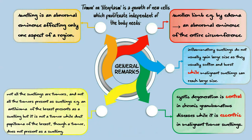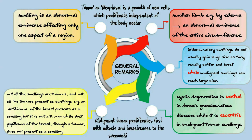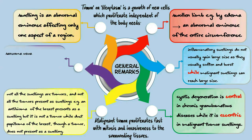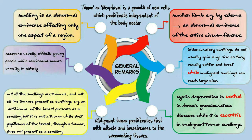Malignant tumors proliferate fast with evident mitosis and invasiveness to the surrounding tissue. Sarcomas usually affect young people, while carcinomas occur mostly in the elderly, but the reverse is quite common.